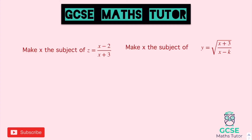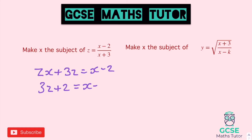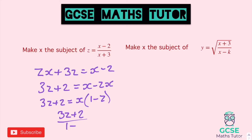Answer for the first one. First things first, we're going to multiply the denominator over — I'm going to do that straight away. We get zx plus 3z equals x minus 2. Then let's get the x's on the same side — I'm going to add the 2 over and minus the zx. So we get 3z plus 2 equals x minus zx. Now I'm going to factorise the right-hand side. So 3z plus 2 equals x brackets 1 minus z. Then finishing it off, dividing by the bracket: 3z plus 2 over 1 minus z equals x.